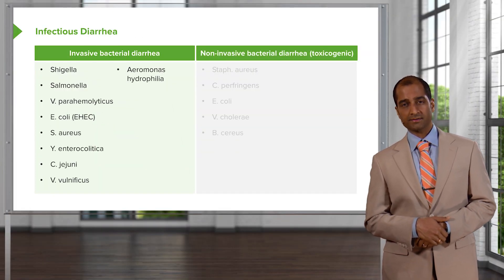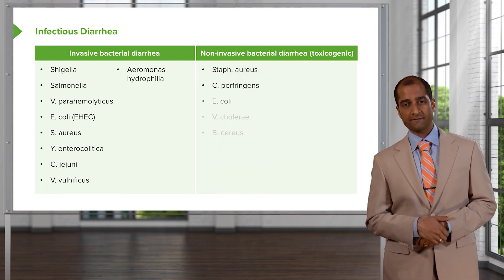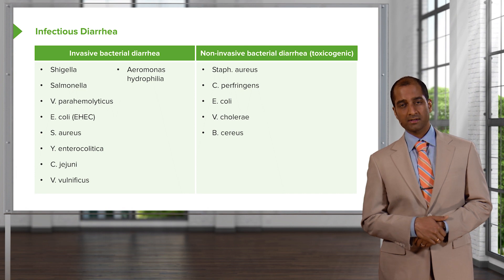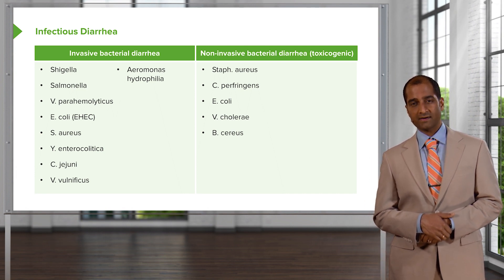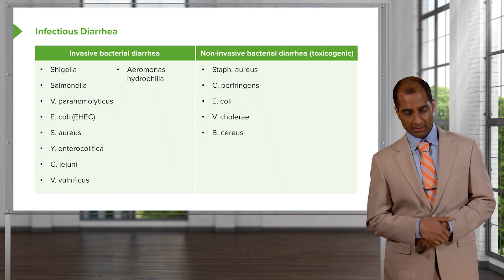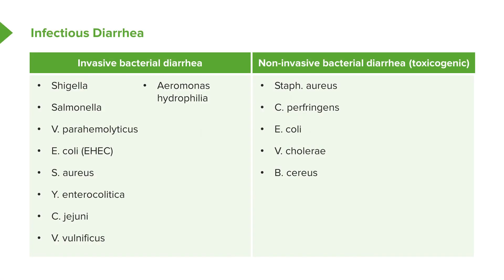On the noninvasive side, we have Staph aureus, Clostridium perfringens, E. coli, Vibrio cholera, and Bacillus cereus. Bacillus cereus can be found with refried beans, rice that's been reheated, or reheated tacos — essentially carbohydrate-based foods that have been reheated, in which Bacillus plays a role.